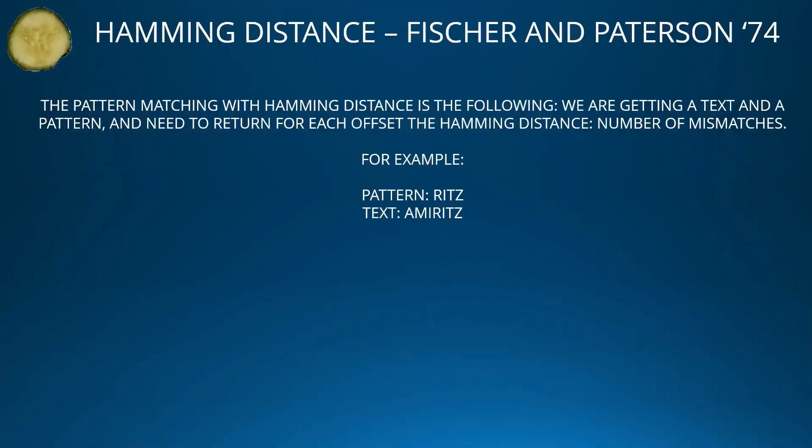Alrighty — Hamming distance, Fischer and Pedersen 1974. The pattern matching with Hamming distance is the following: we are given a text and a pattern and need to return for each offset the Hamming distance, i.e., the number of mismatches.